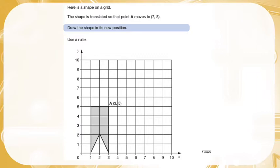Let's have a look at moving it to (7, 8). I started from 0 and I've moved across 7, and then I have moved up 8. So where my point is now is the new position of point A. All I need to do now is I need to draw my shape in its new position.